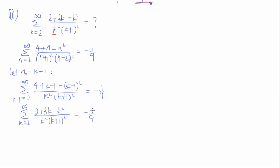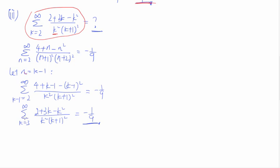We've essentially solved it — this sum equals negative 1/9 based on the previous answer. But there's one problem: this is not quite the answer the question is looking for, because we're dealing with a slightly different series. The question wants the sum starting from k = 2, but what we know is the series starting from k = 3. In other words, the question's series has one more term than what we know.